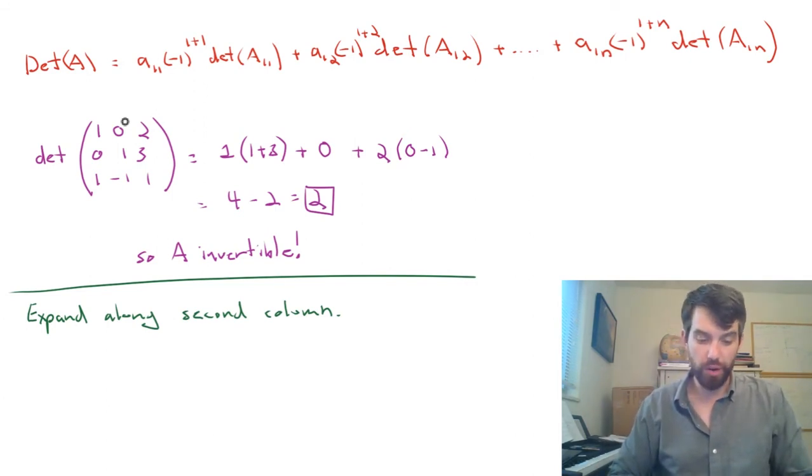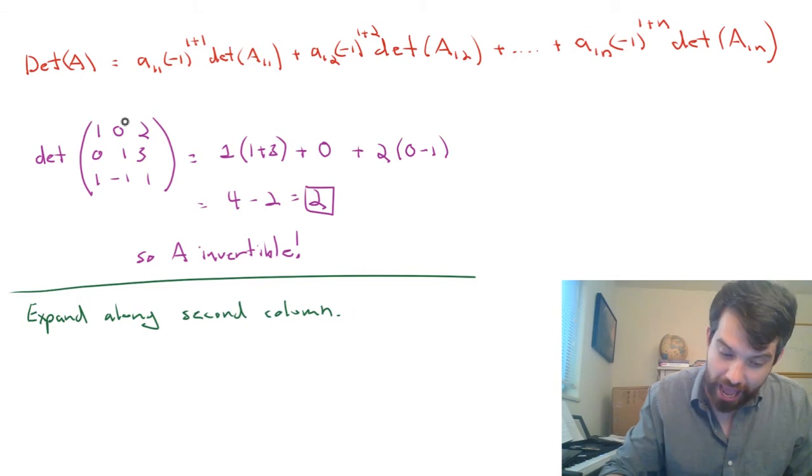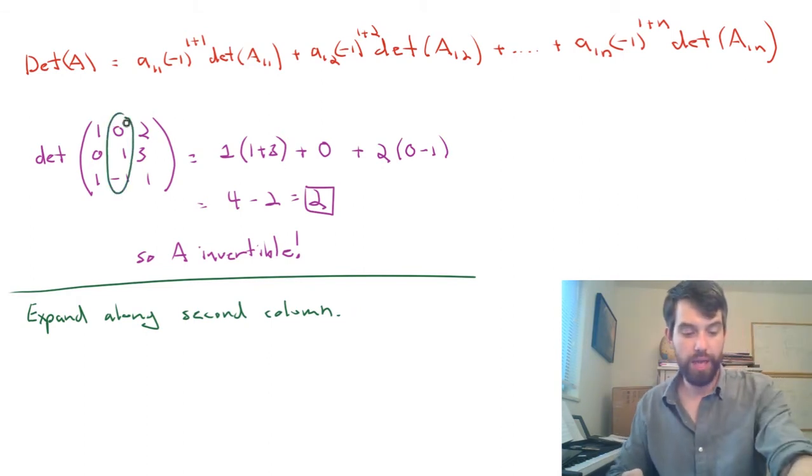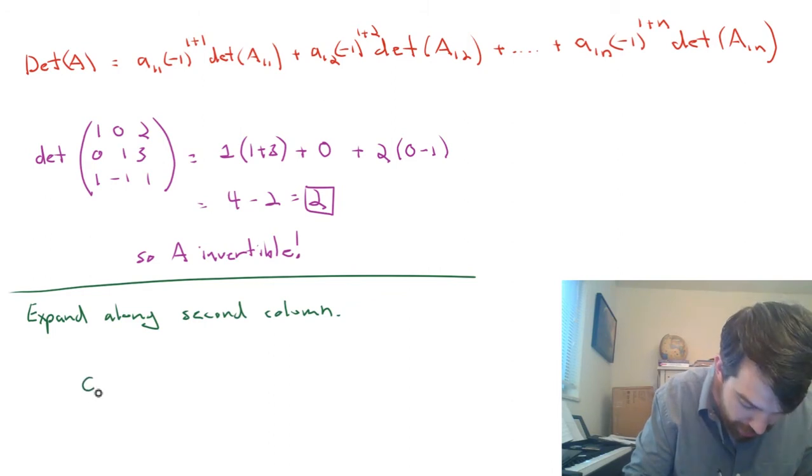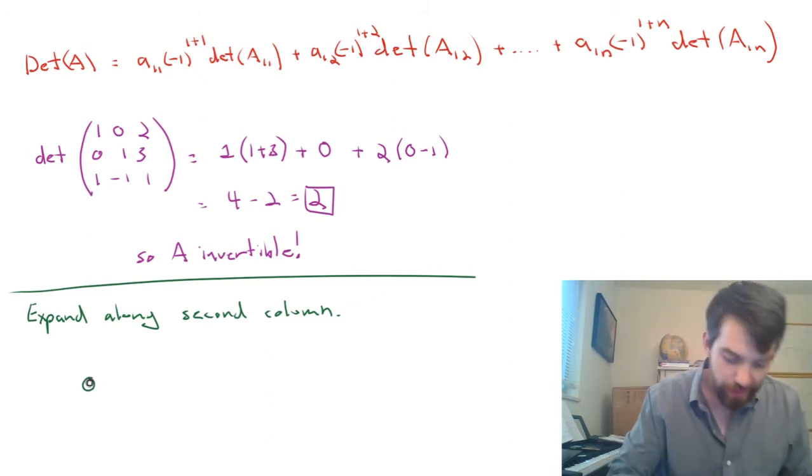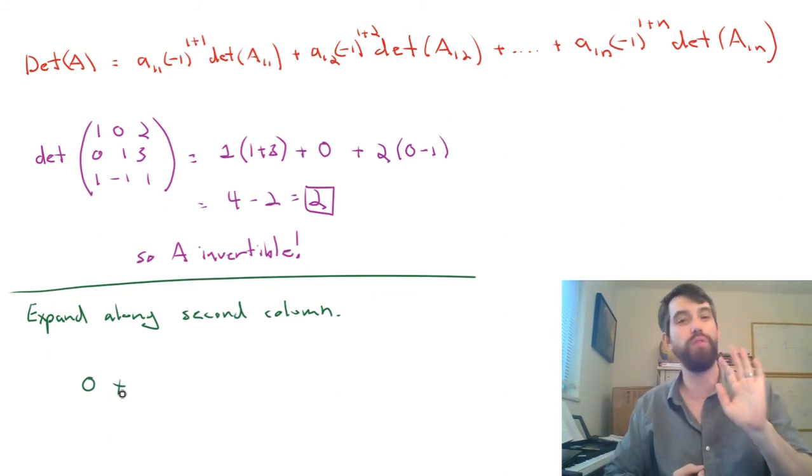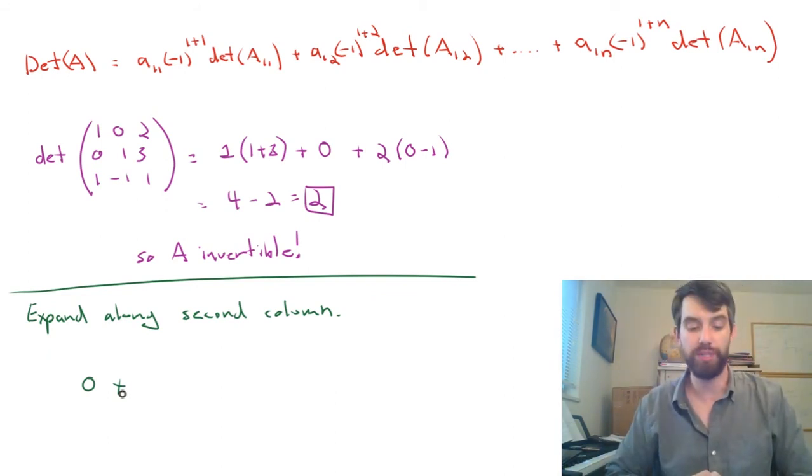I'm going to be going down this main column. My first part is right there in the A_12 location. I have a big fat zero, so I start with that. I don't even worry about my minus ones or my determinants because they're all going to be multiplied by zero.